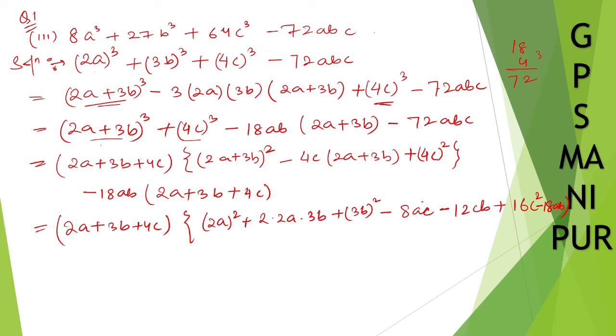I hope it is clear to you. I will write it again. So, this one taken common, 2a plus 3b plus 4c. So, 2a whole square it will be 4a square.